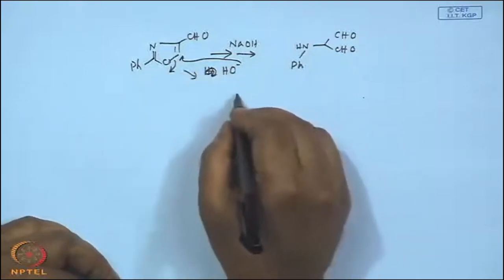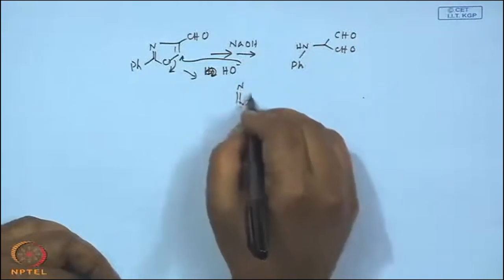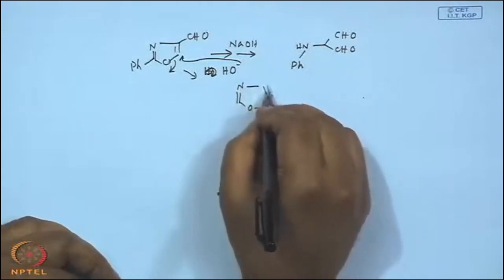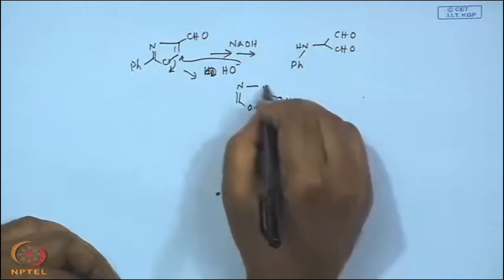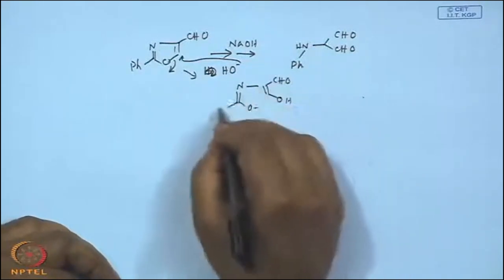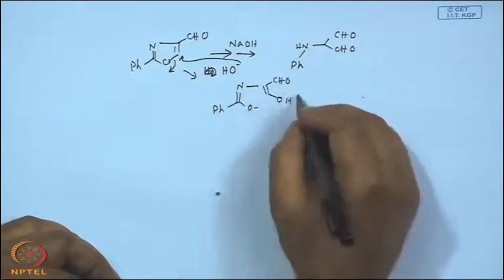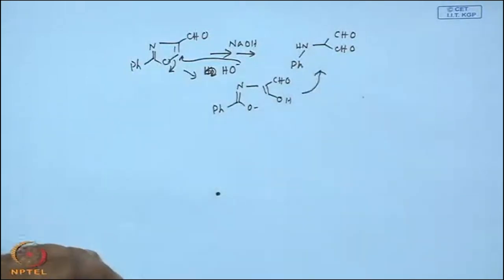You will have nitrogen, oxygen minus, then CHO, and after proton transport tautomerizations you can get the final product. This was the original discovery by Kornforth.